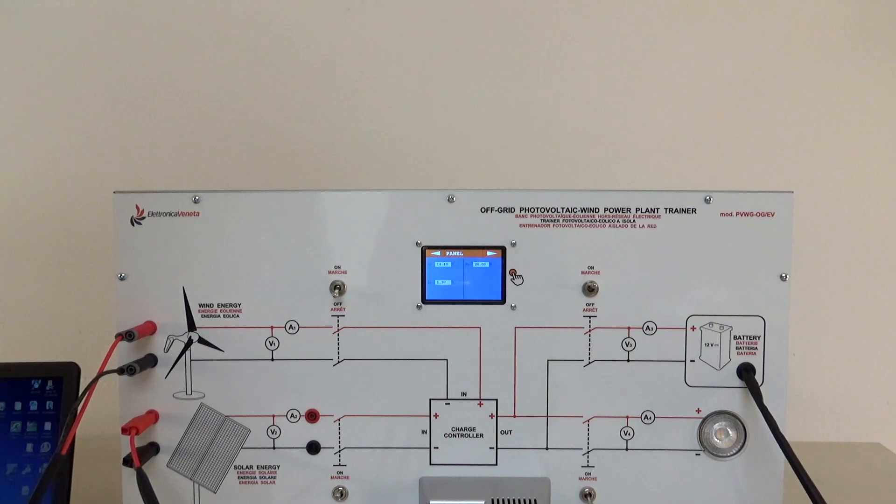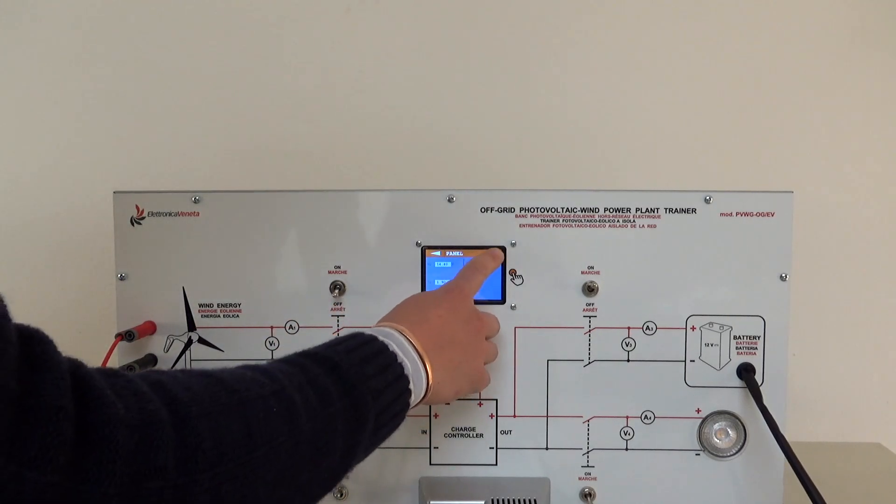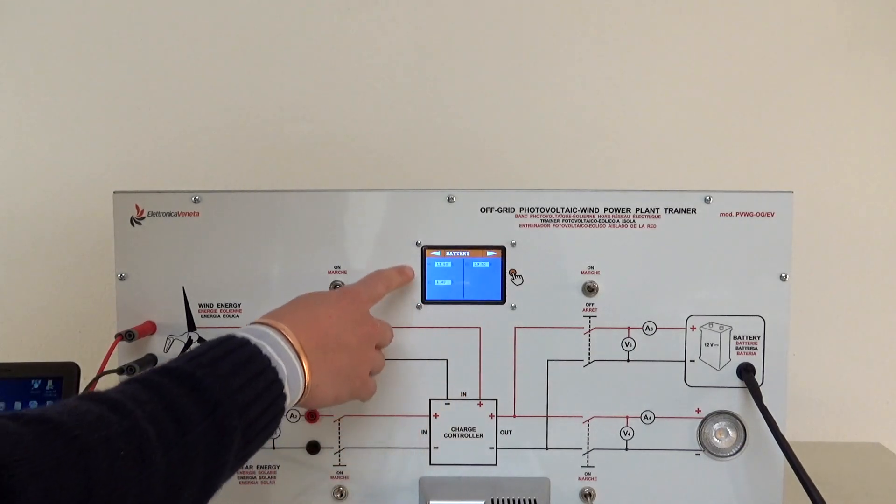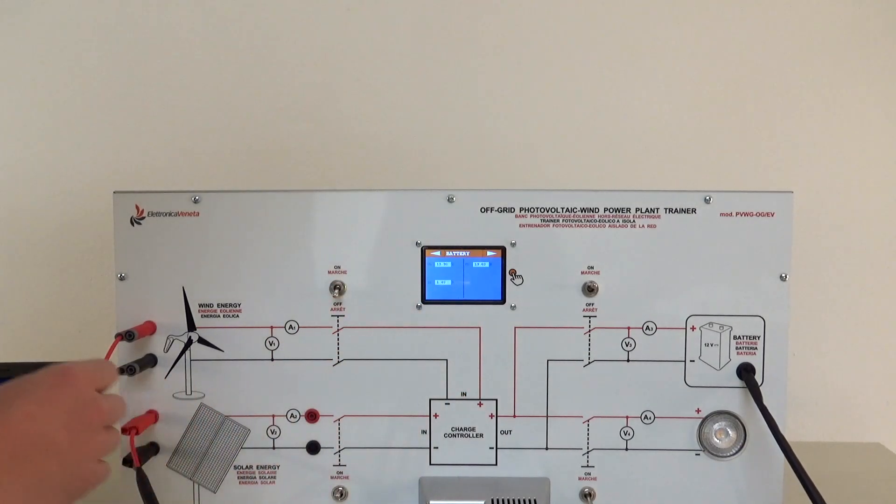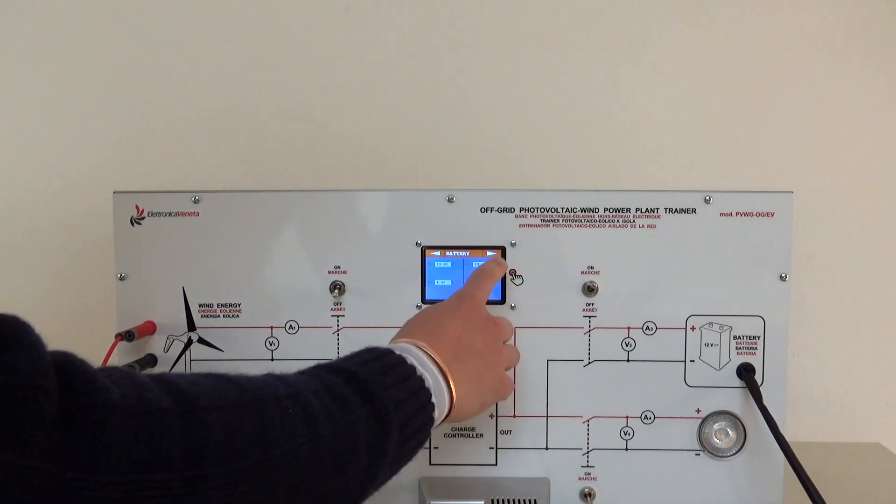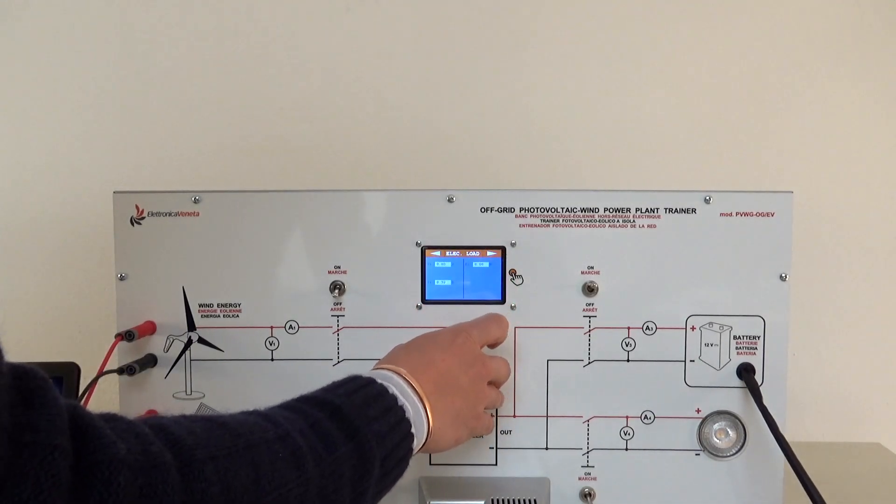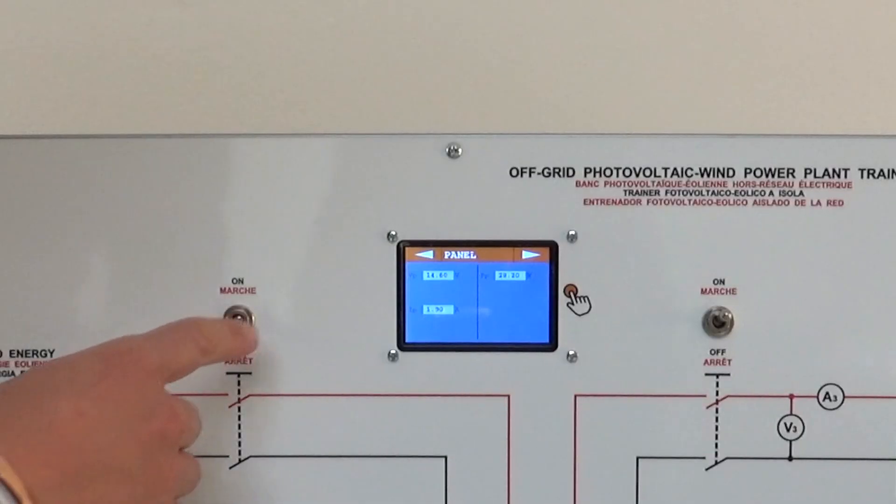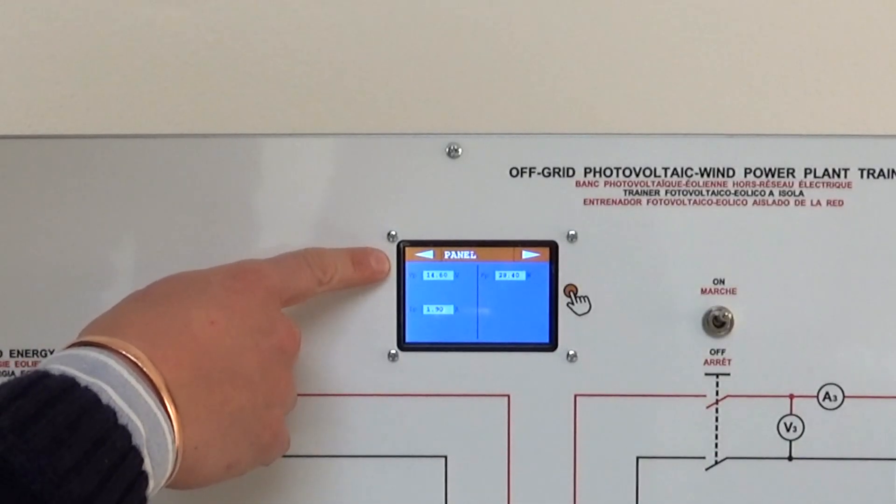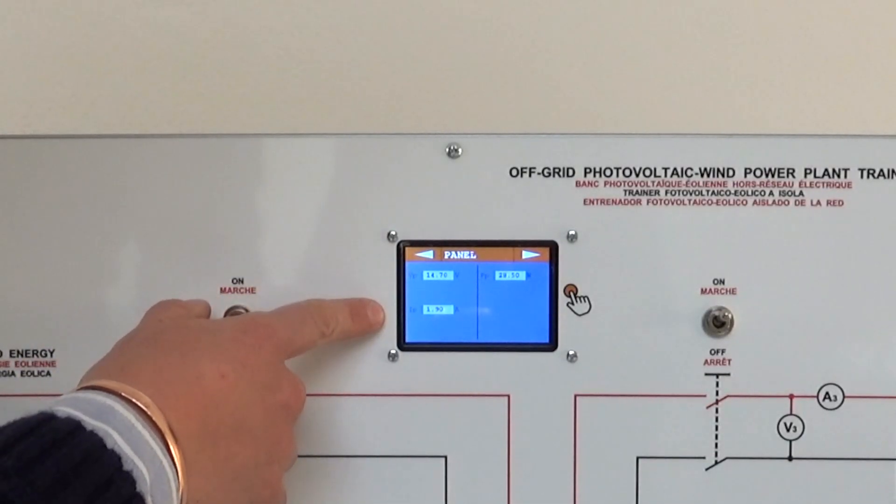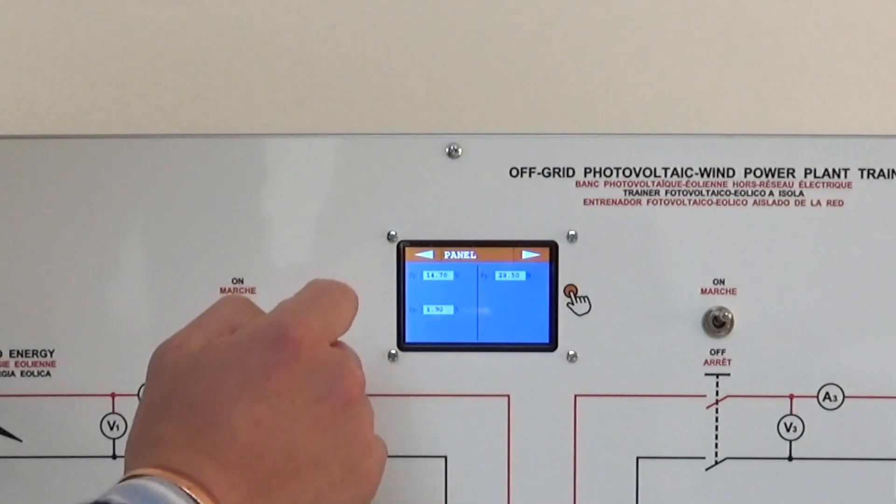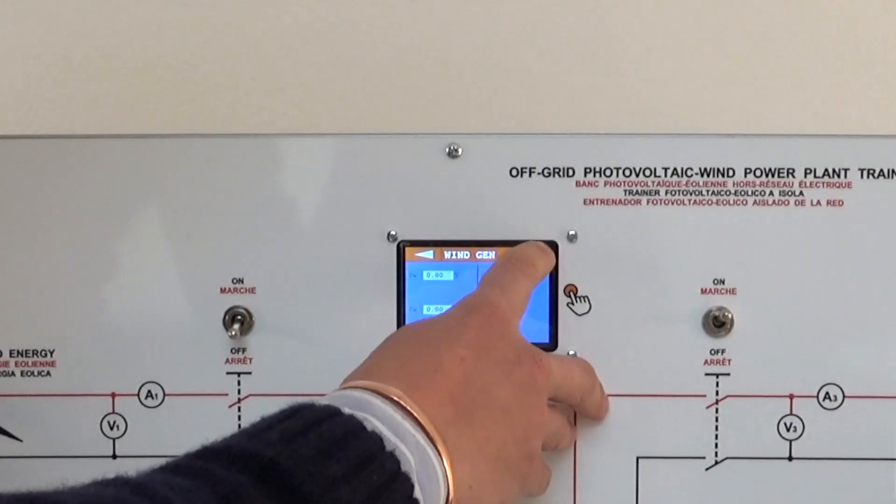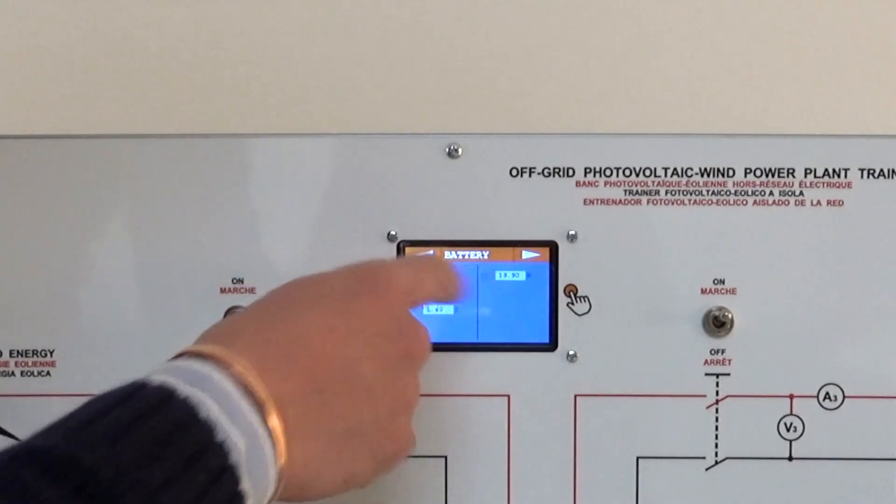All the acquired data can be seen on the touchscreen panel in which voltage, current and active power of each component is displayed. For example, now I see the voltage of the panel, the current of the panel, and the total active power supplied which goes not in the wind part but directly on the battery.